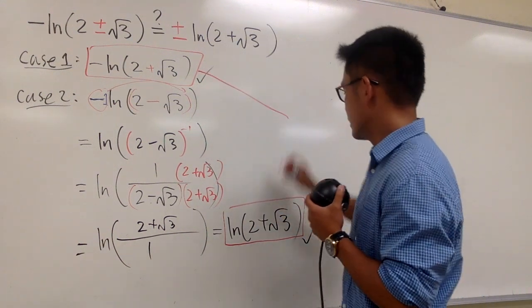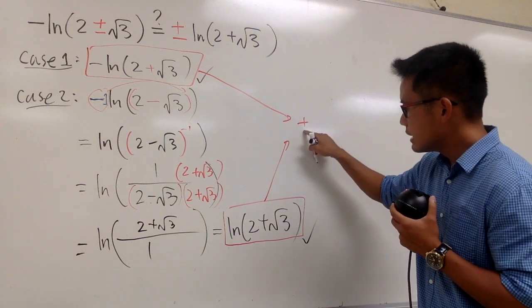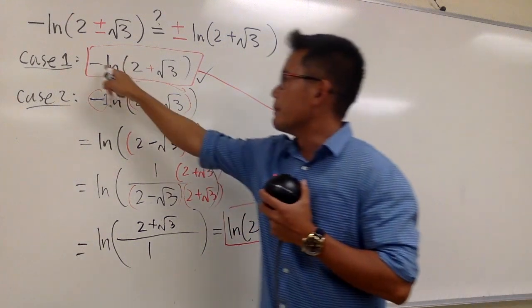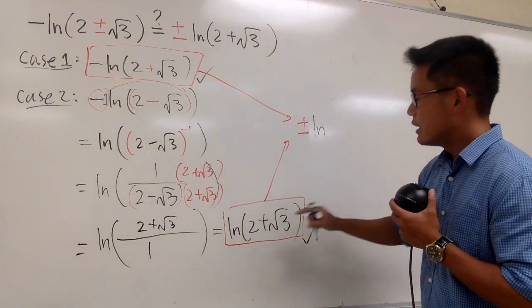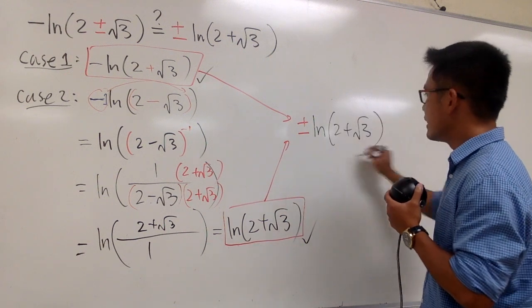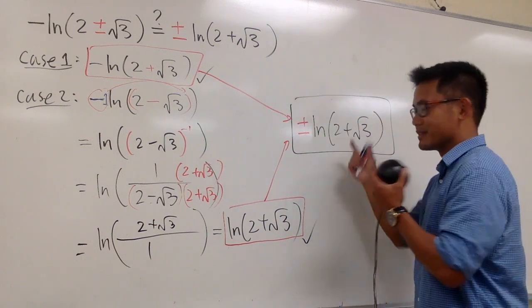So if you just combine these two together, of course, we can have the plus from here. This is the positive version. And the minus from here. And then we have the ln, and then the inside are the same, which is 2 plus square root of 3. And this is exactly the right-hand side. So that's it.